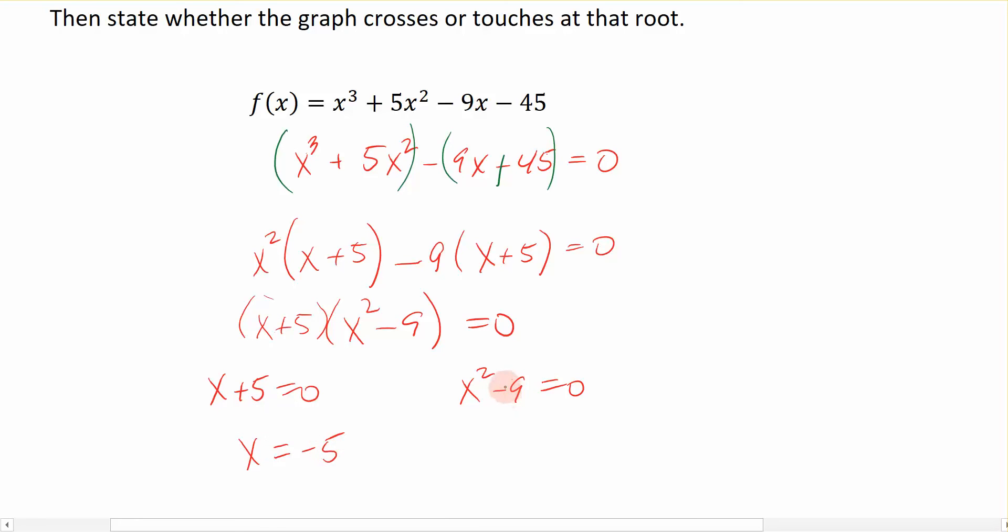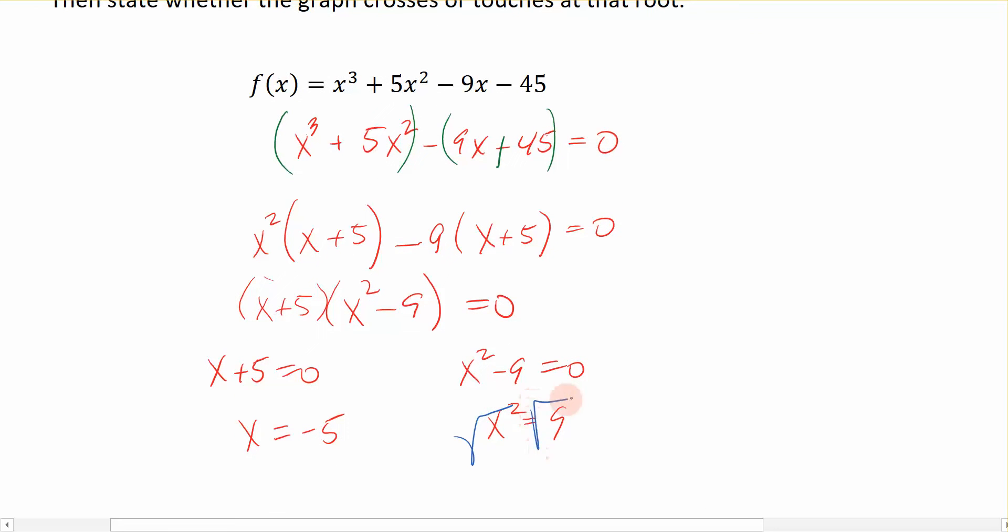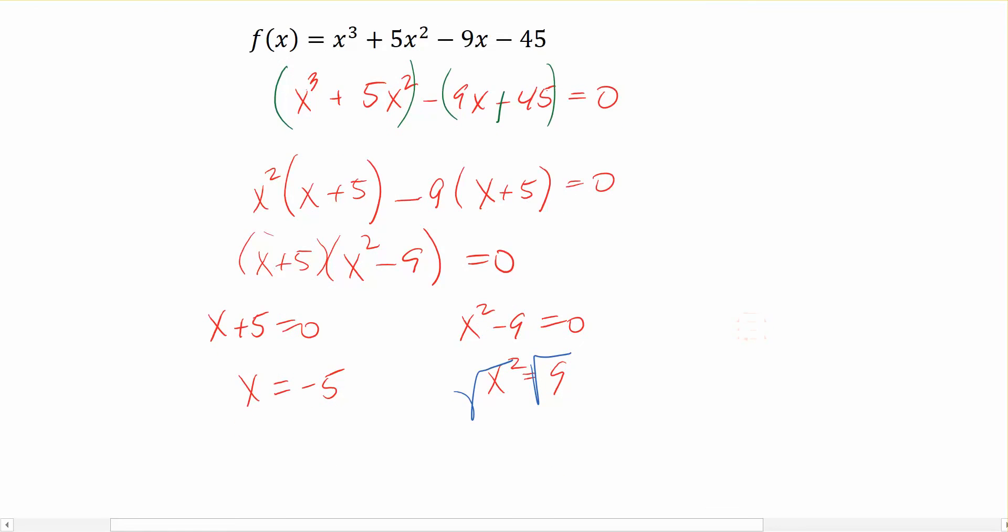Here, how do I solve that? Well, the fastest way is going to be to add 9 to the other side. And now that I have a squared term equal to a constant, I can take the square root of both sides and find out that x is equal to plus or minus 3. Okay, so what did we do? We found out what the zeros are of the function. But we need to now determine what the multiplicity is of each of those zeros.